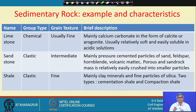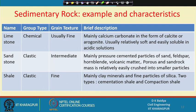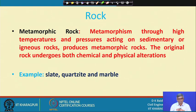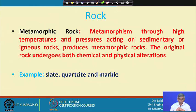These are very briefly the rocks, and next we will try to see how further weathering processes can transform rock into soil. Next is metamorphic rock — metamorphism is required, and metamorphism through high temperature and pressure acting on sedimentary or igneous rocks produces metamorphic rocks. The original rock undergoes both chemical and physical alteration. Some examples are slate, quartzite, and marble.